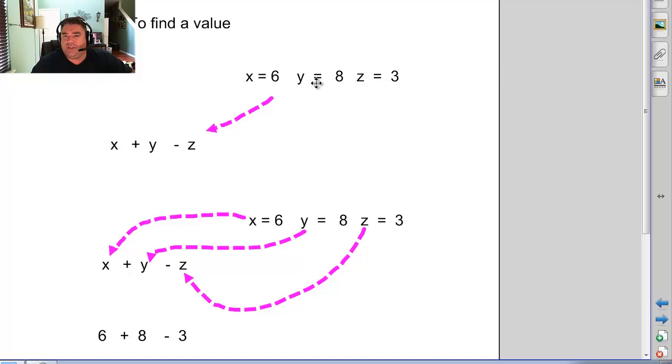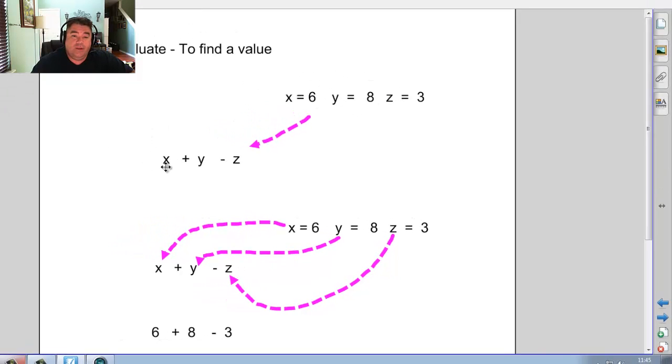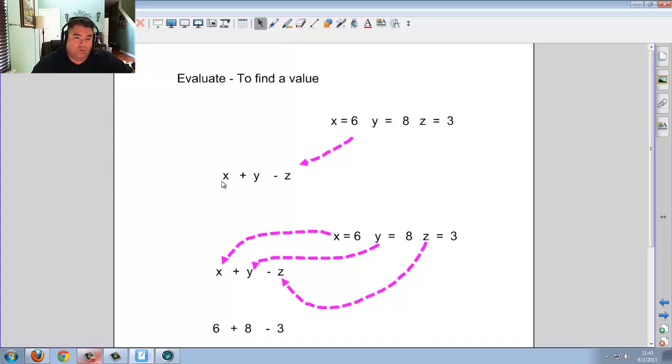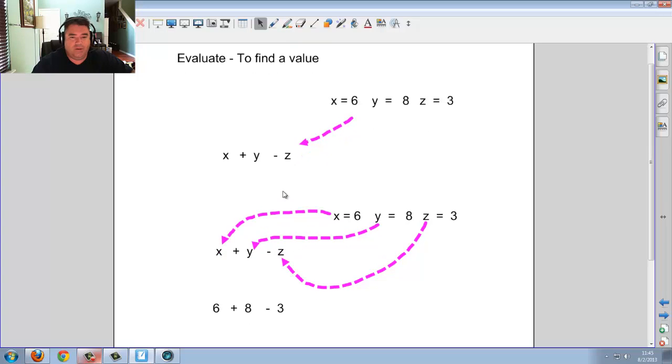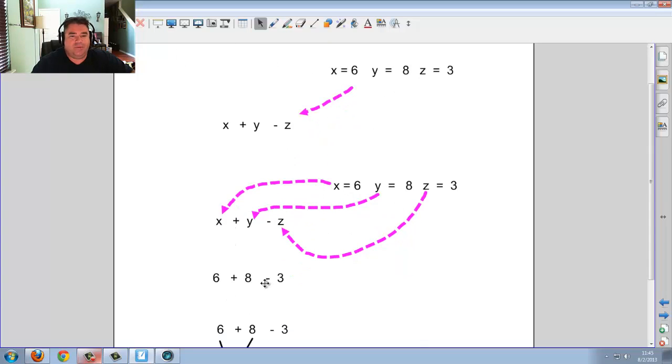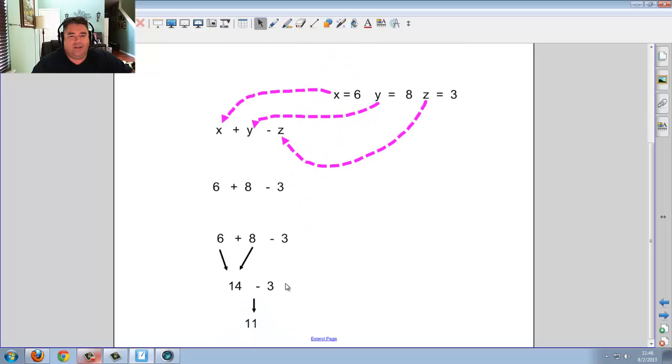So here you say that x equals 6, y equals 8, z equals 3. Now they have to tell you this. If they don't tell you this, you can't solve the problem. So they're saying if x equals 6, y equals 8, z equals 3. How do you solve this? Well, all we got to do is switch in. So there's an x, we put it in the 6. Y is an 8. Z is 3. So you plug them in. You get 6 plus 8 minus 3.